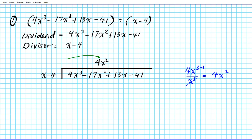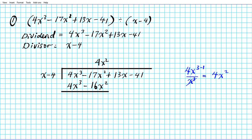Now we distribute 4x² into the two terms of our divisor polynomial. We get 4x² times x = 4x³, and 4x² times negative 4 = negative 16x². Think of division as repeated subtraction — we subtract factors out of the dividend polynomial until we end up with our remainder. This is the first factor we just extracted; we subtract it from the dividend.